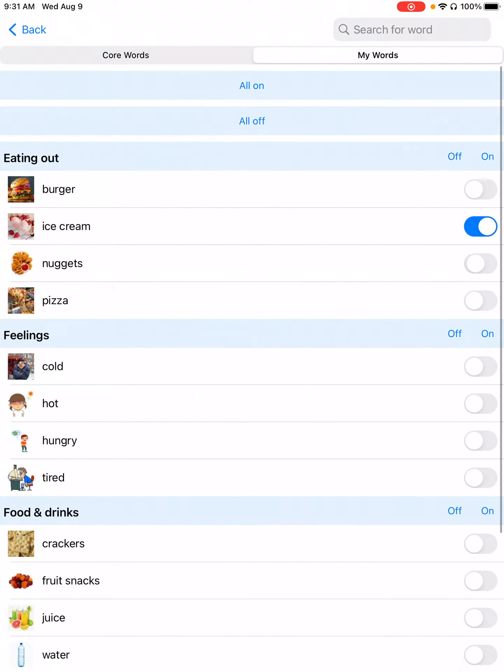You can add individual words to your child's AAC or entire categories. Or if you scroll to the top and press all on, you can just add everything.